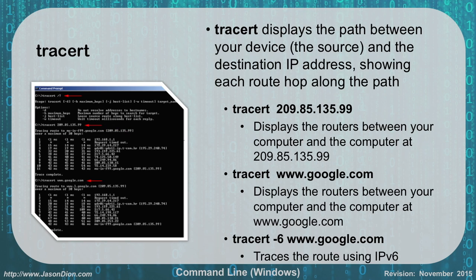Traceroute uses the same technology as ping, but the difference is it shows the route from your source all the way to your destination, displaying every router — every hop — along the way. In the example on the left, the trace went through 11 different routers before reaching the destination. You can traceroute by IP address or by name using DNS. Using -6 will route the traffic over IPv6, just like with ping.